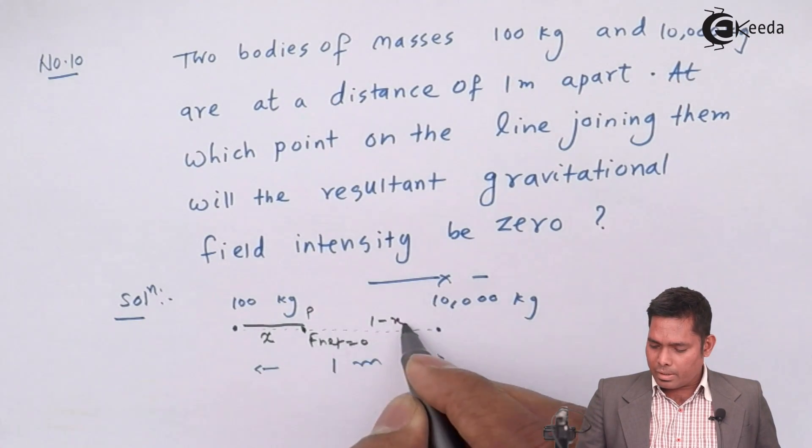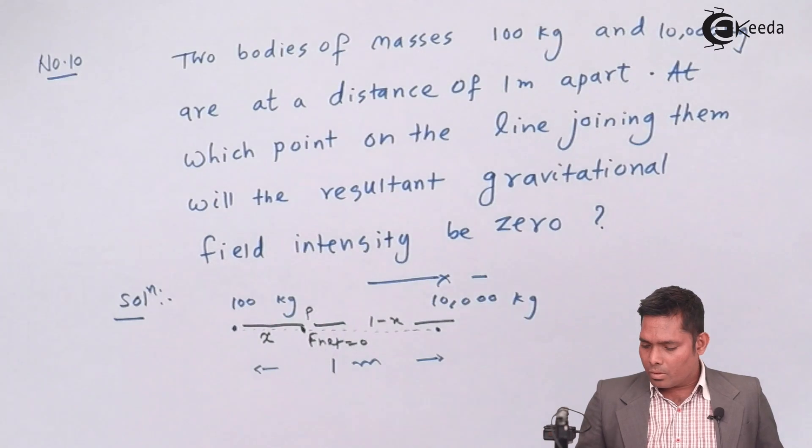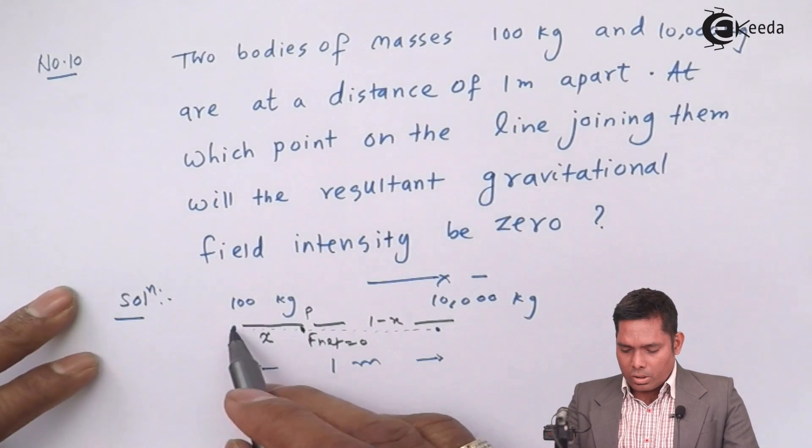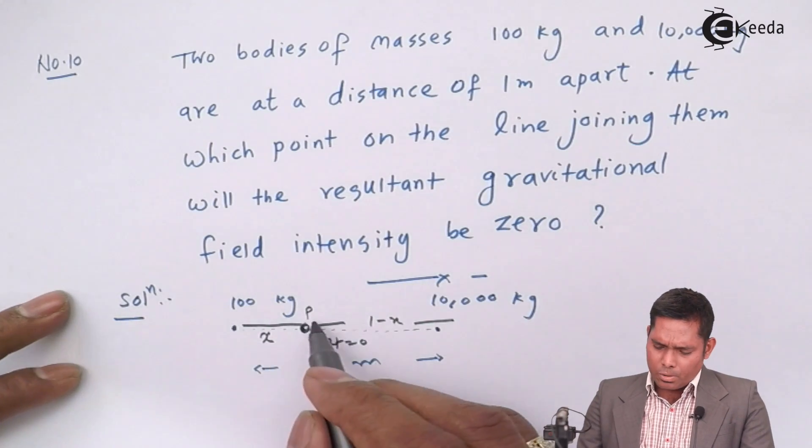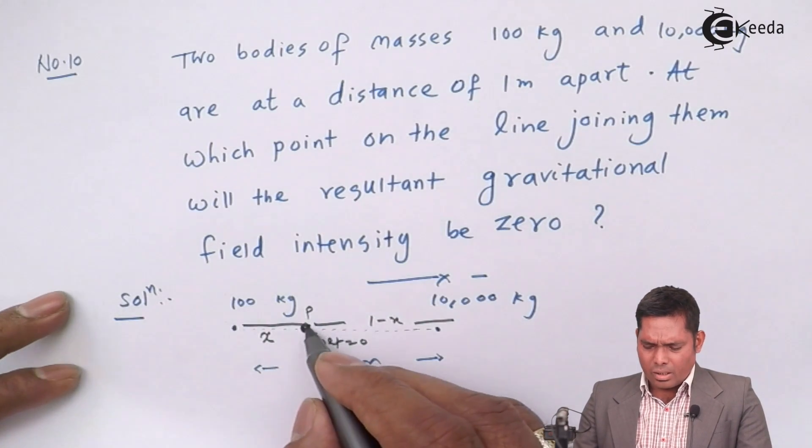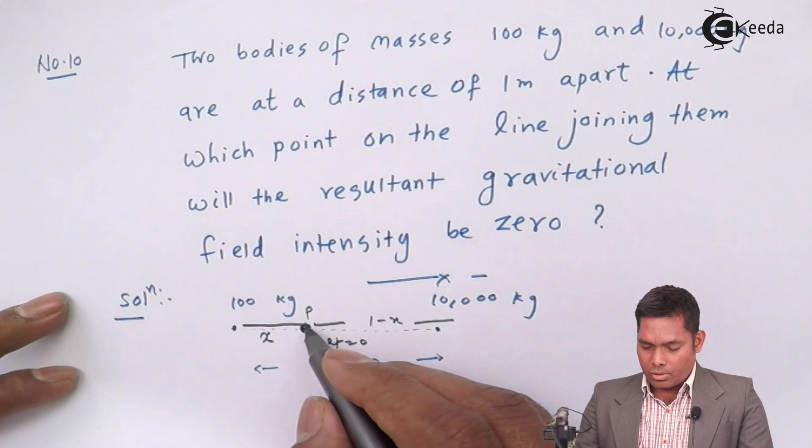So if this distance is x, then the remaining distance will be one minus x. So now the force on this point - suppose the point mass, any mass is placed where the intensity is zero.